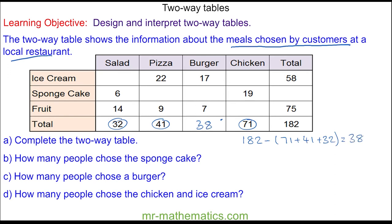I can use this new information to work out the number of people who had a sponge cake and a burger, which is 38 take away the seven and the 17, and this makes 14.